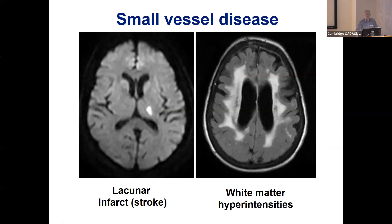CADASIL produces very characteristic appearances on MRI, and MRI is really what usually diagnoses the disease. The two most common findings are small strokes — they tend to be quite small because the blood vessels are small, so if blood flow is disrupted you get a small stroke, as you can see here. You also get more chronic changes — a kind of scarring in the brain — because blood flow in the vessels isn't quite normal. That's what you can see on this scan as the white areas; the black areas are normal fluid. These white areas are called white matter hyperintensities.